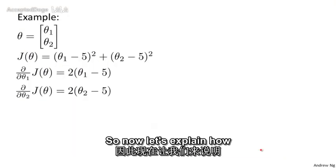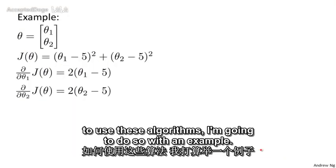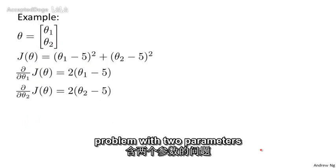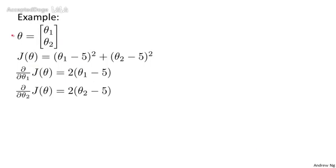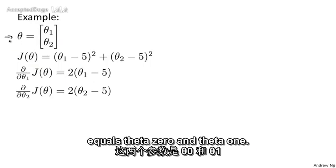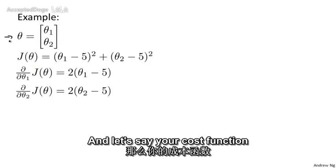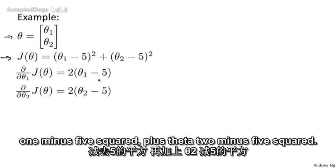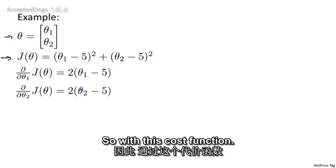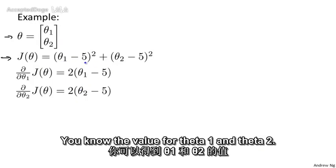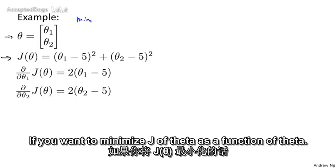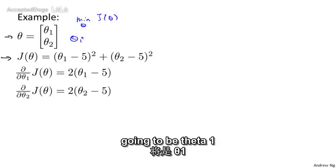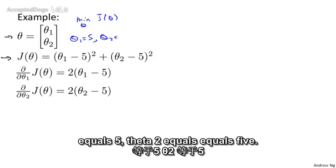Now let's explain how to use these algorithms with an example. Let's say that you have a problem with two parameters: theta equals theta 0 and theta 1. And let's say your cost function is J of theta equals (theta 1 minus 5) squared plus (theta 2 minus 5) squared. With this cost function, the value that minimizes J of theta is going to be theta 1 equals 5, theta 2 equals 5.